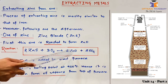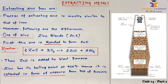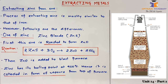This zinc oxide formed is added to the blast furnace. All other procedures are similar to that of extraction of iron: calcium carbonate and coke are also added, coke reacts with oxygen to form carbon dioxide, then carbon monoxide is formed, and carbon monoxide reduces zinc oxide to form zinc.